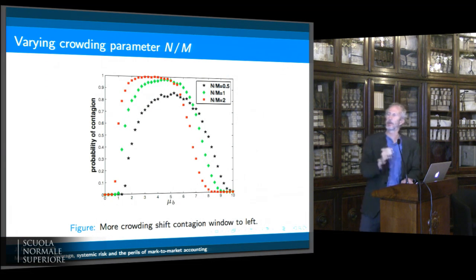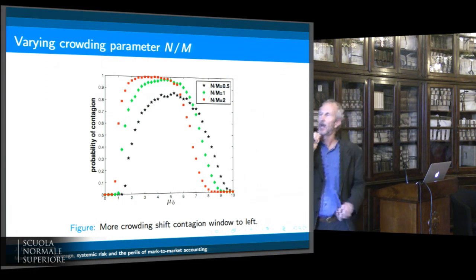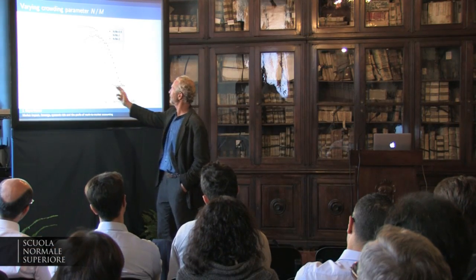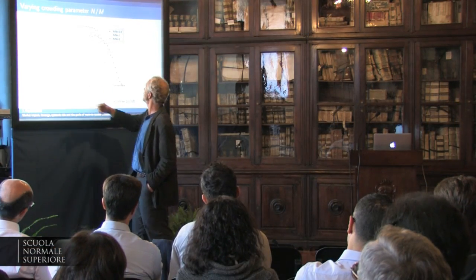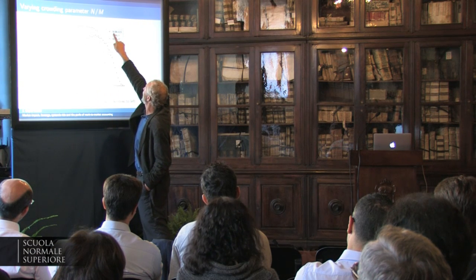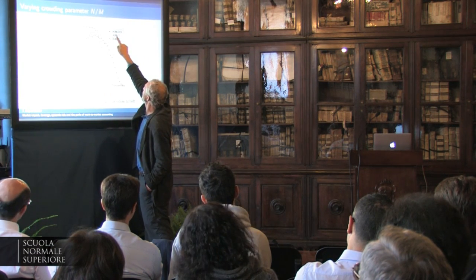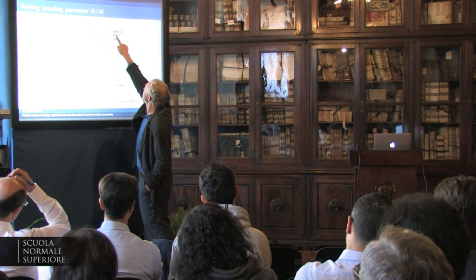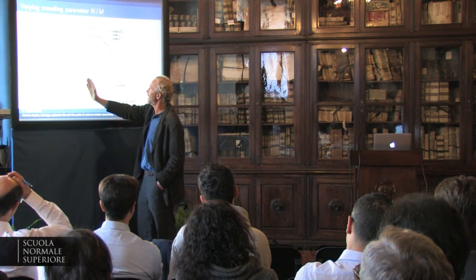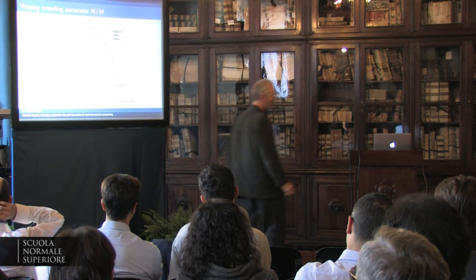You can vary parameters. As you increase the crowding parameter — increasing the number of institutions relative to the size of the asset space — we shift the contagion window to the left.